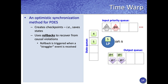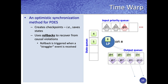For example, if we receive an event at time 9, its timestamp is in the future relative to the current local virtual time, so it is simply enqueued into the priority queue. The next event to process is at timestamp 8, so event 8 is processed, local virtual time is updated, output events are generated, and the state is saved.